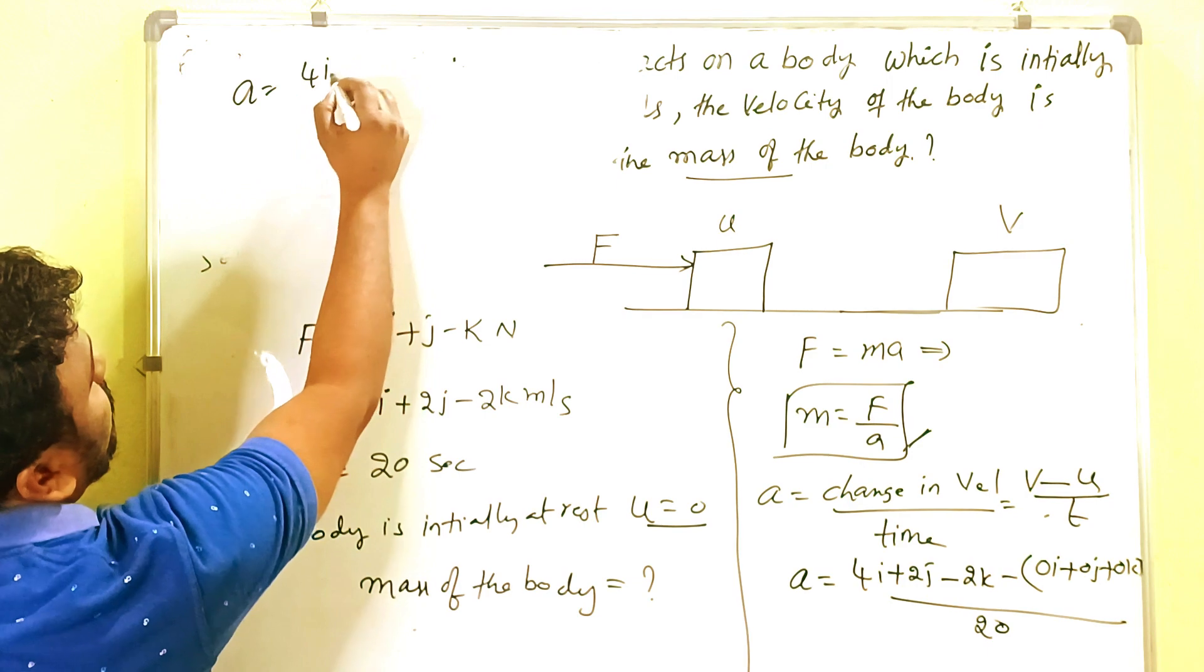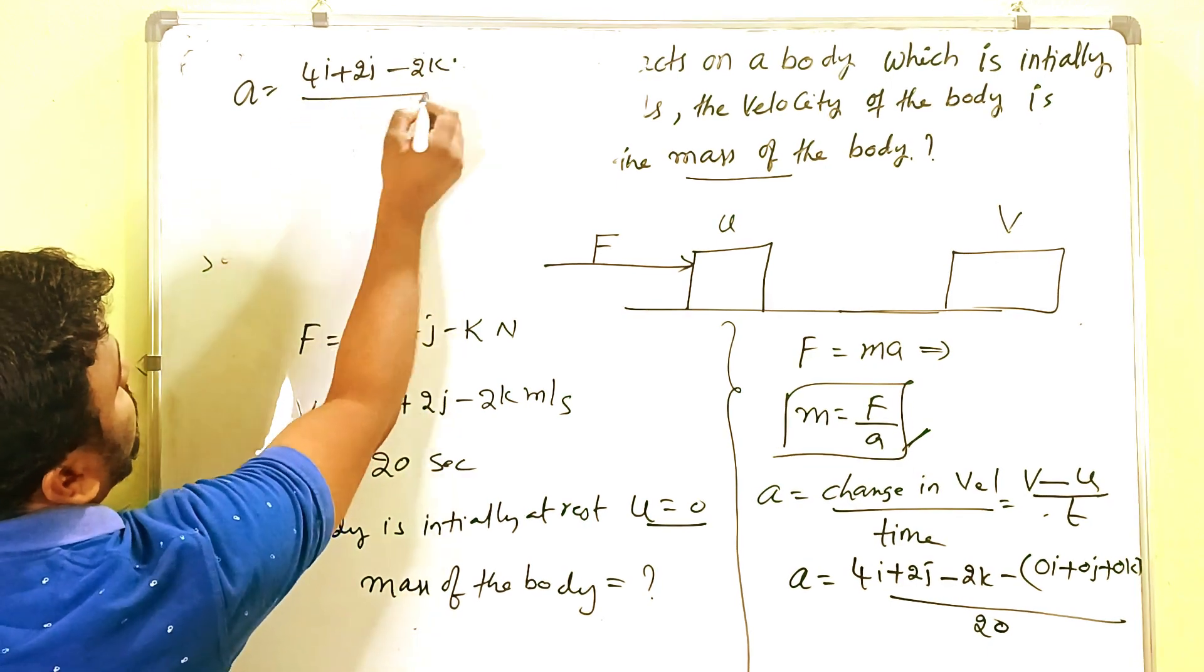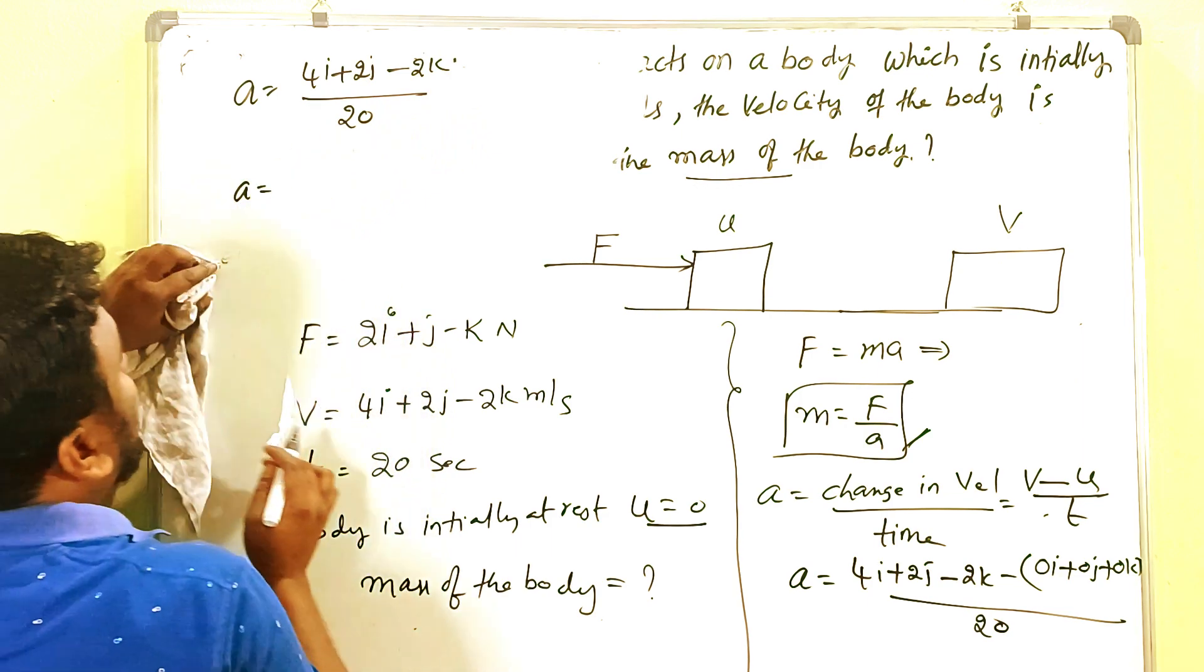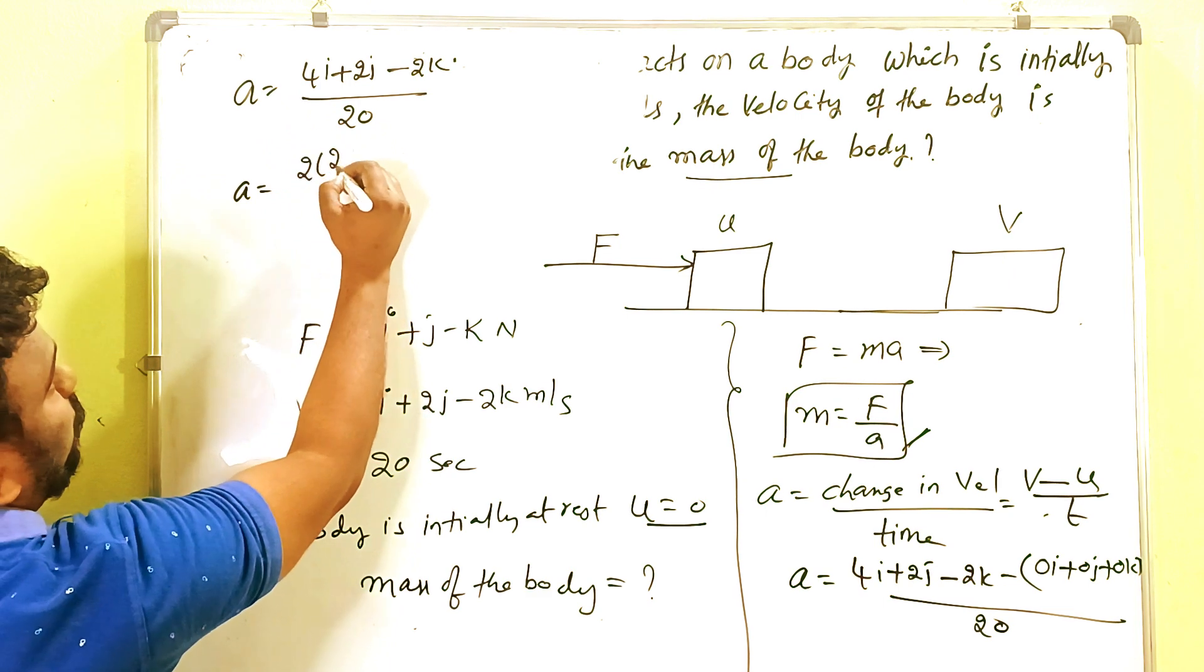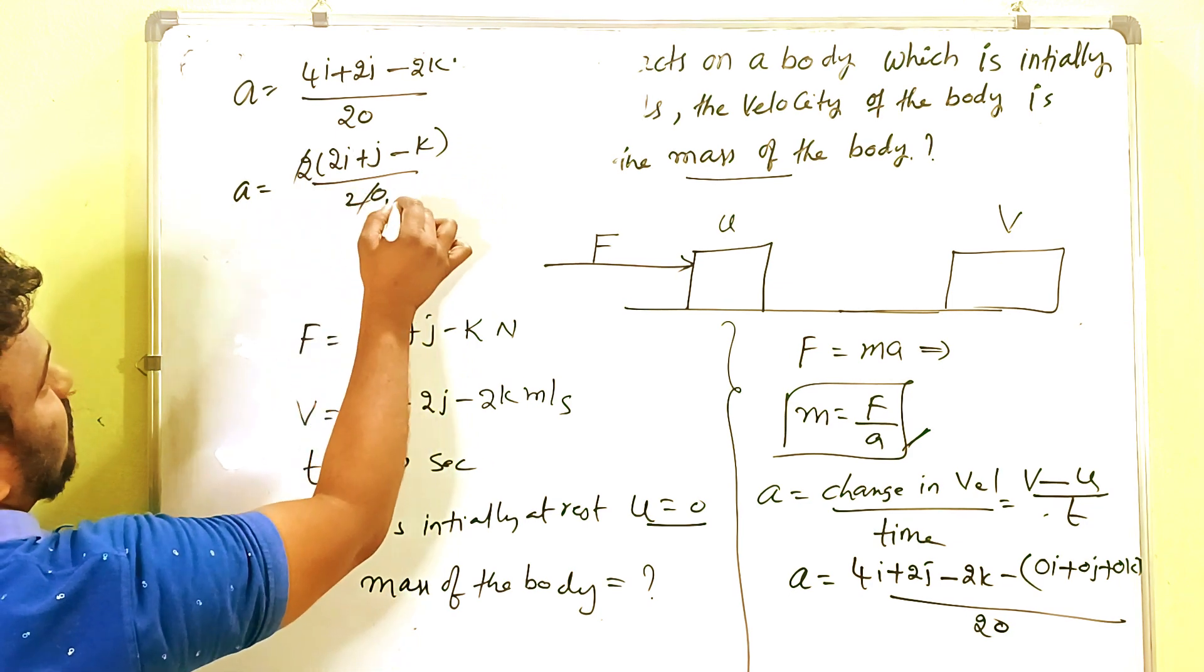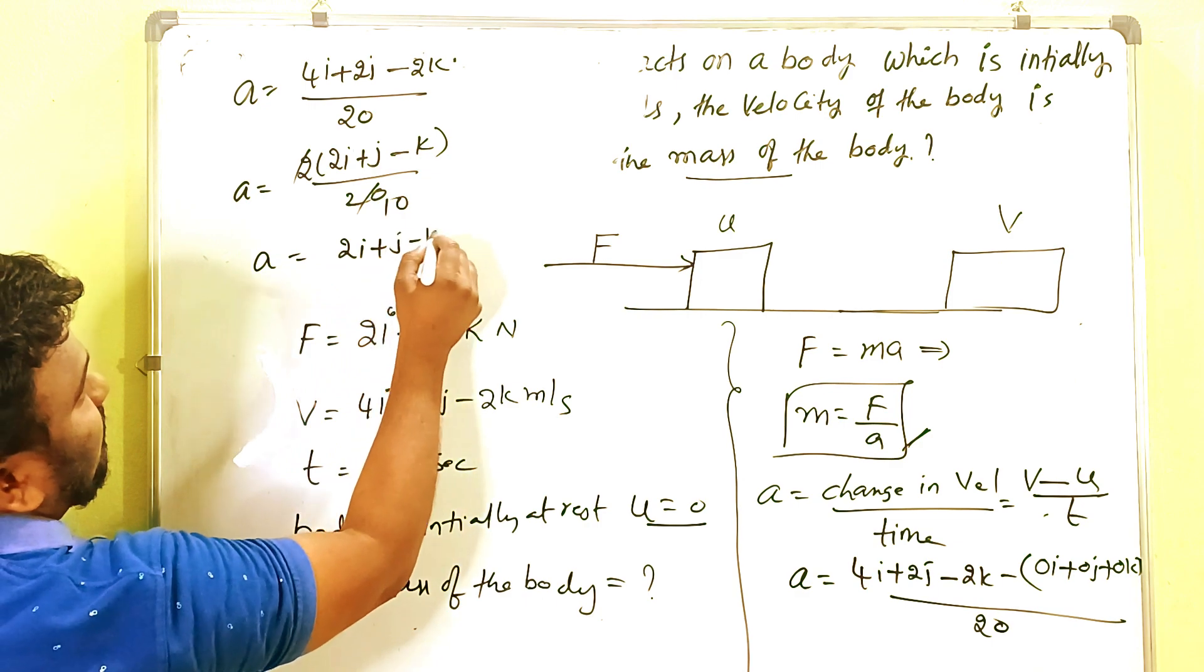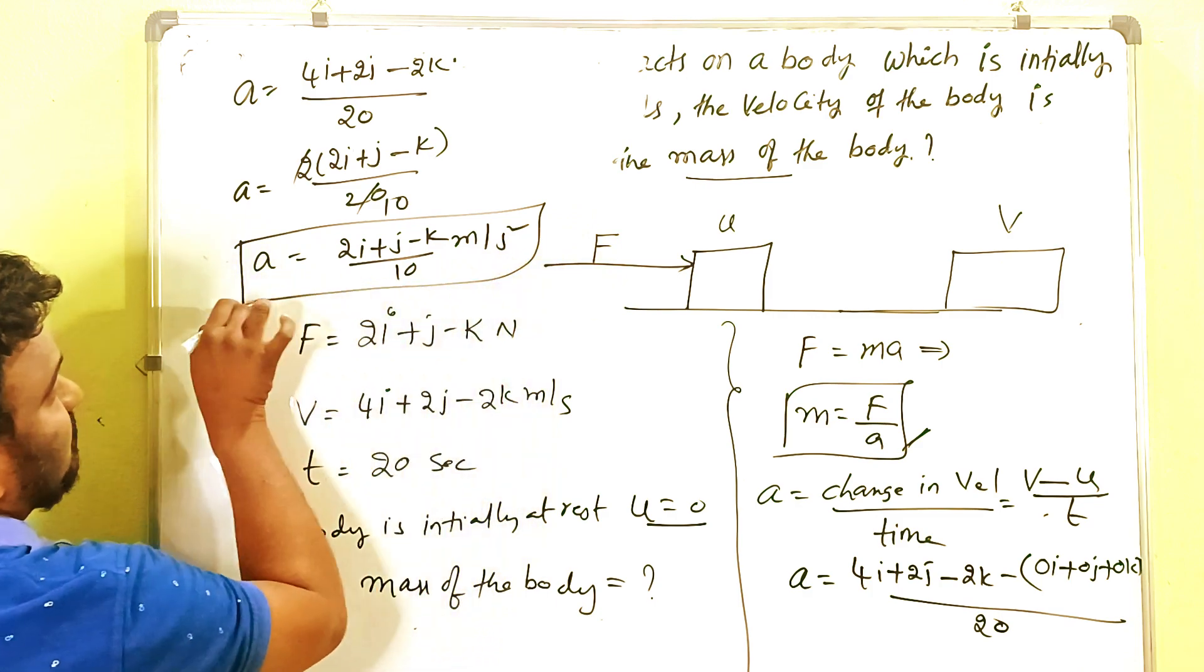Then A equals, taking 2 as common in the numerator: 2i plus j minus k by 20. Two tens are ten. Then A equals 2i plus j minus k by 10 meters per second squared. This is the value of acceleration.